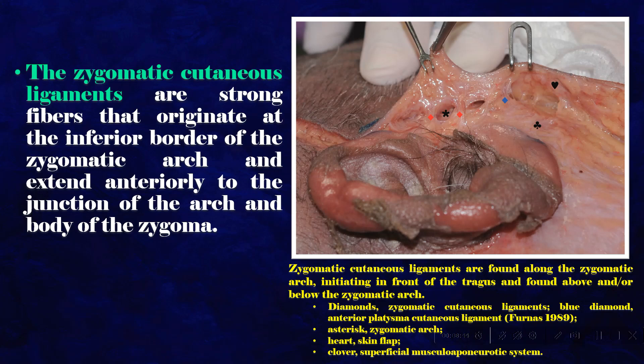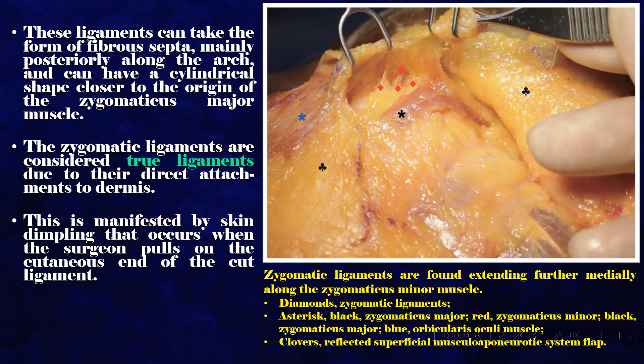The zygomatic cutaneous ligaments are strong fibers that originate at the inferior border of the zygomatic arch and extend anteriorly to the junction of the arch and body of the zygoma. They are found along the zygomatic arch, initiating in front of the tragus, and found above and/or below the zygomatic arch. These ligaments can take the form of fibrous septa, mainly posteriorly along the arch, and can have a cylindrical shape closer to the origin of the zygomaticus major muscle. The zygomatic ligaments are considered true ligaments due to their direct attachments to the dermis.